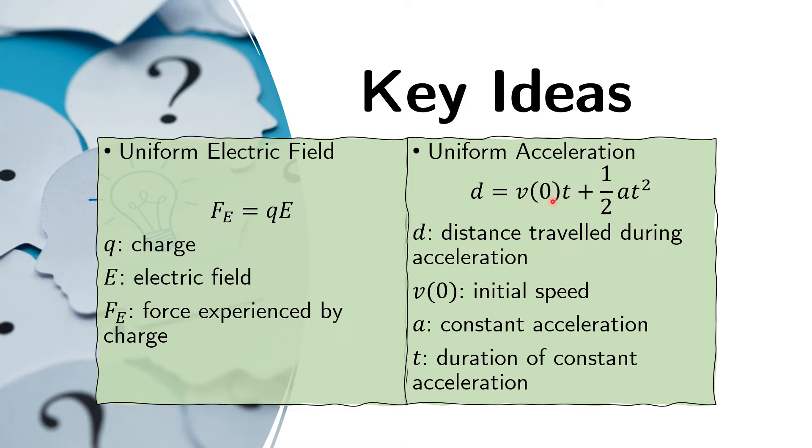V of 0 is the initial speed of that body. Time is the duration of the acceleration. And here A is the acceleration and A must be constant.